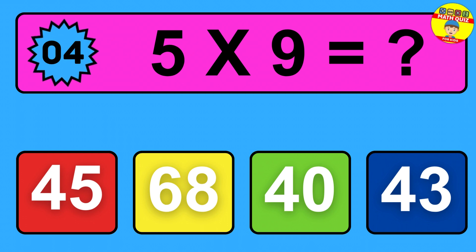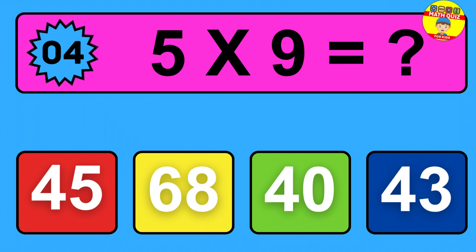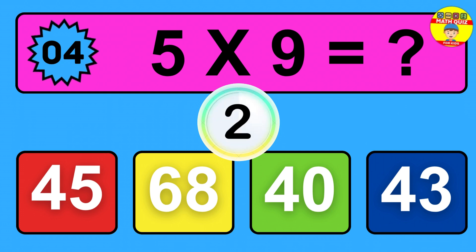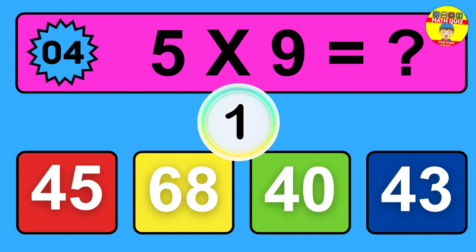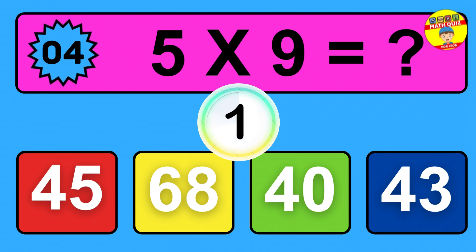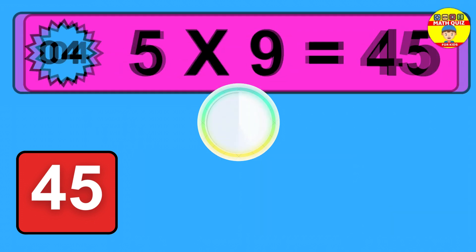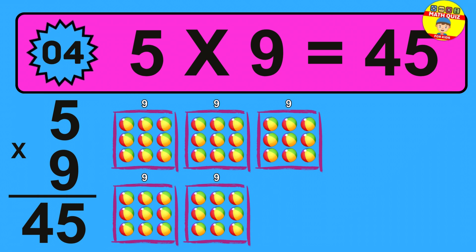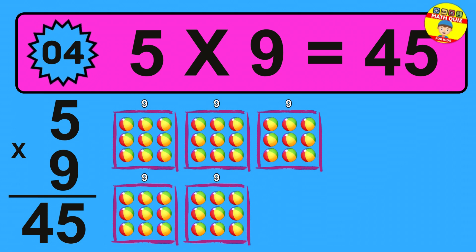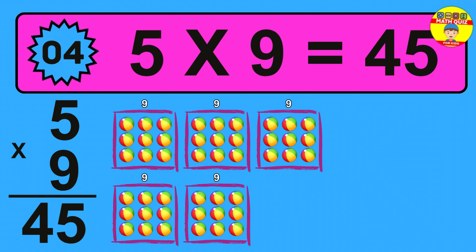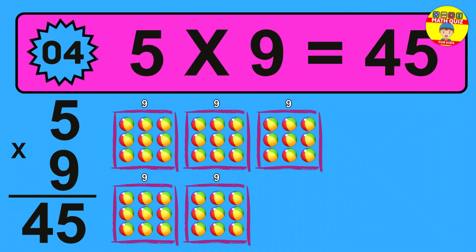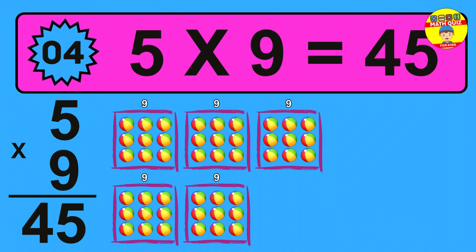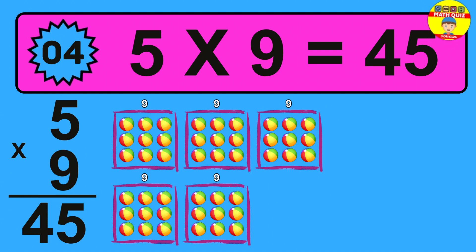Question 4: 5 times 9 equals what? The answer is 5 times 9 is 45. To calculate, we have 5 groups with 9 balls each one. So how many balls do we have? 45 balls.